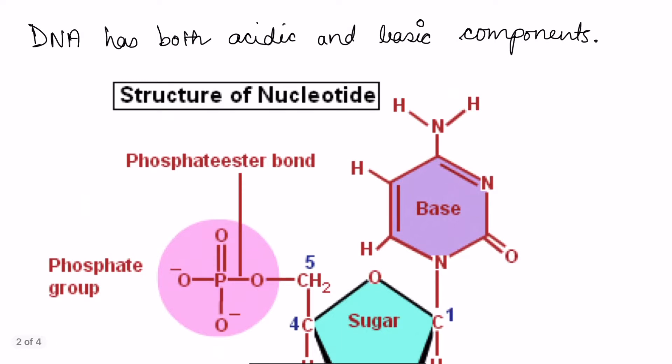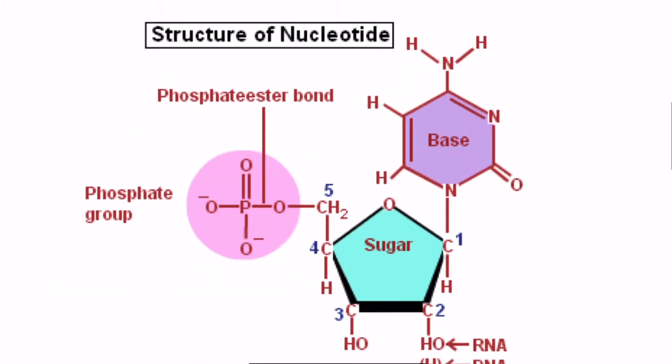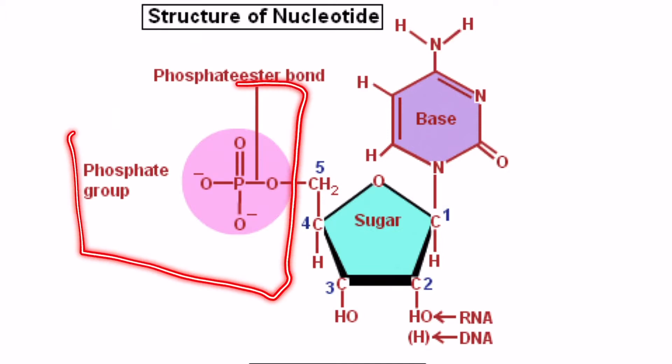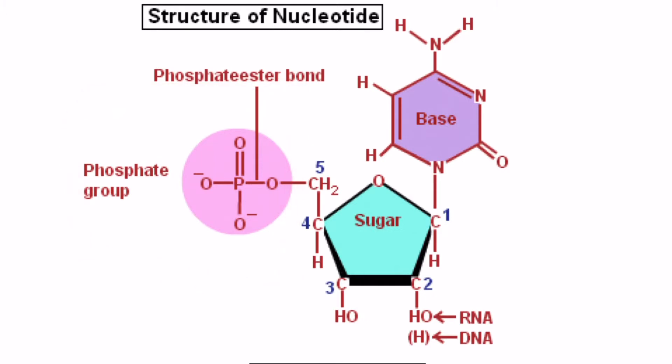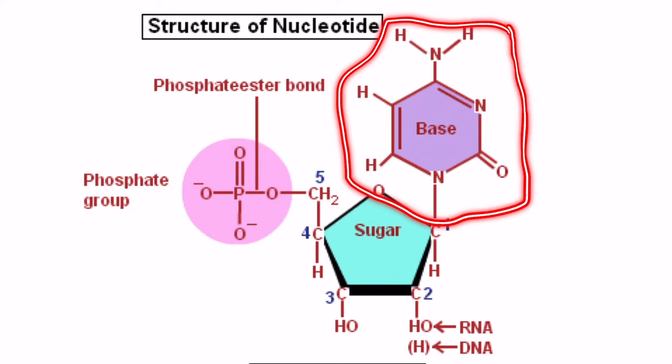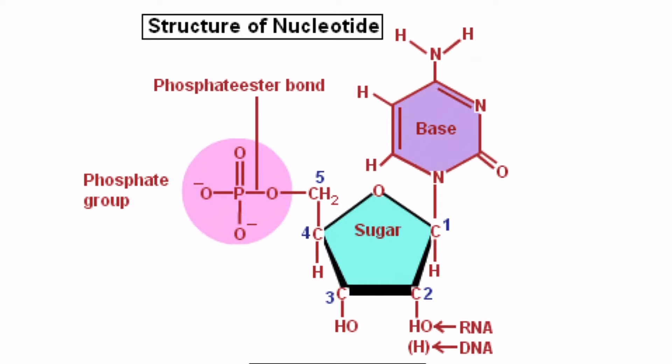The acidic component of DNA is the phosphate group. Here is a structure of a nucleotide given over here which is forming DNA. So this phosphate group over here gives DNA the acidic character. Then we can also notice that here is a base and there is this NH2 group over here, so this is also giving the basic character of DNA. Then why is it called a nucleic acid when it also has this basic component?